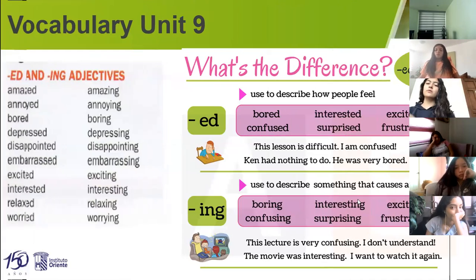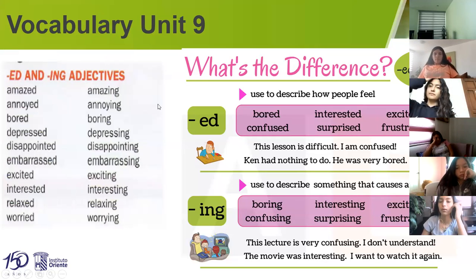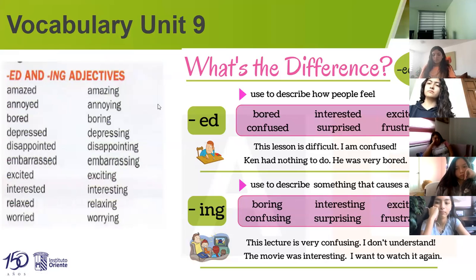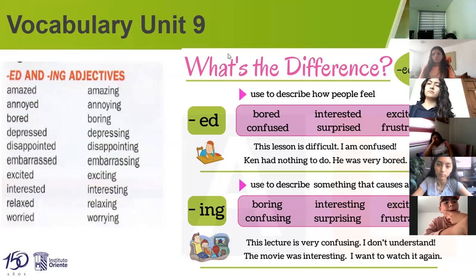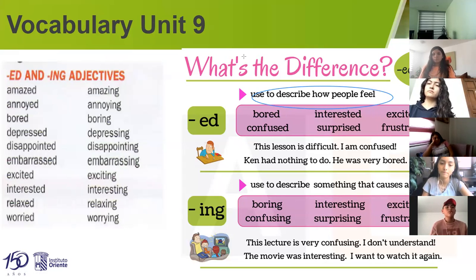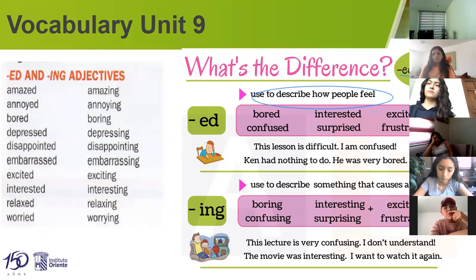Okay, now pay attention with the vocabulary — this is the last part of the vocabulary. Observe please: we have adjectives ending with -ed and -ing. What is the difference? The adjectives ending with -ed are for describing how people feel. If you are using an adjective that has -ed at the end, you use it to describe your emotion: bored, confused, interested, surprised, excited, frustrated.